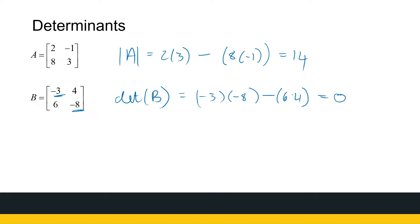It will become significant later whether a matrix has a zero or non-zero determinant, and it will tell us other things about the matrices — but we'll get to that in further sections. Finding the determinant of a 2 by 2 matrix is a straightforward calculation: multiply and subtract.